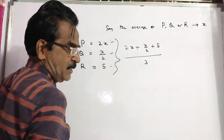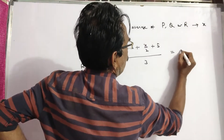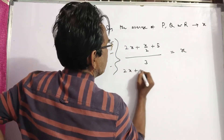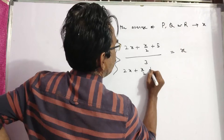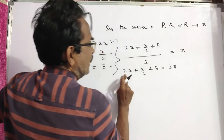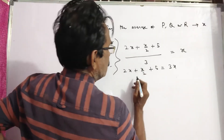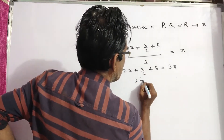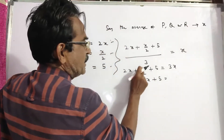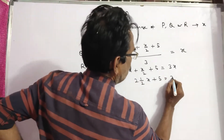2X plus X by 2 plus 5, divided by 3, will give the average. The average age of P, Q, R is equal to X. So: 2X plus X/2 plus 5 is equal to 3X. That is, 2 and a half X plus 5 equals 3X.